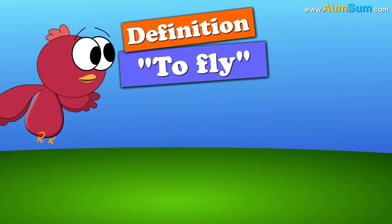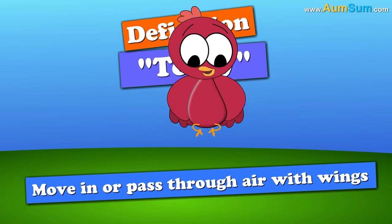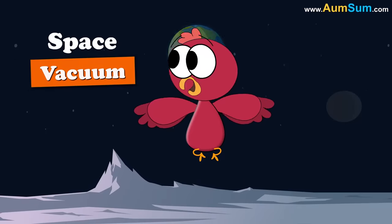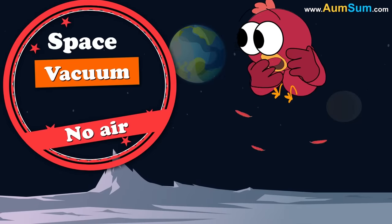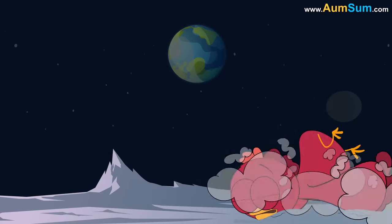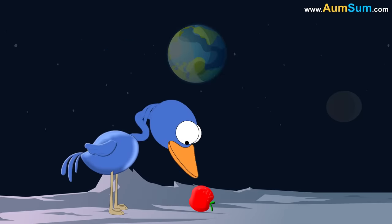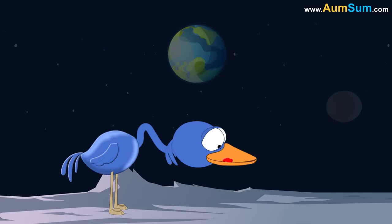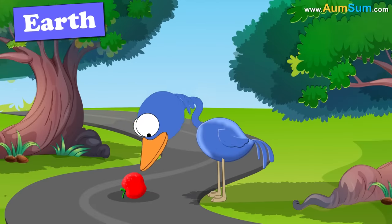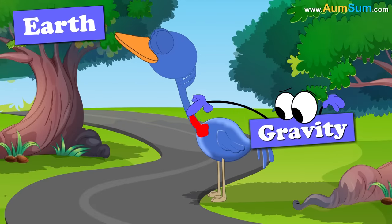Also, the definition of 'to fly' is to move in or pass through air with wings. Now, space is a vacuum — it has no air. Thus, without air a bird will not be able to fly. Finally, even if birds were able to fly in space, they will not be able to swallow food, because birds depend on gravity to push their food downwards.